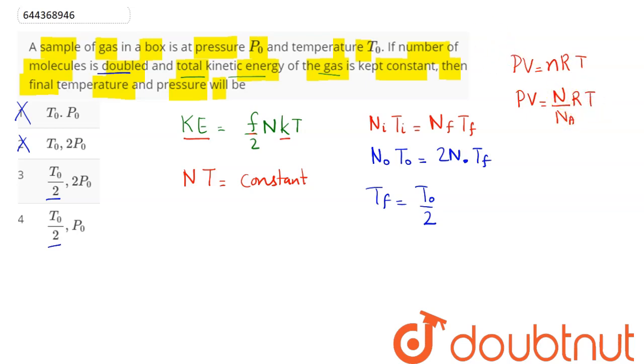This relation simplifies to PV = N × k × T. Now, as